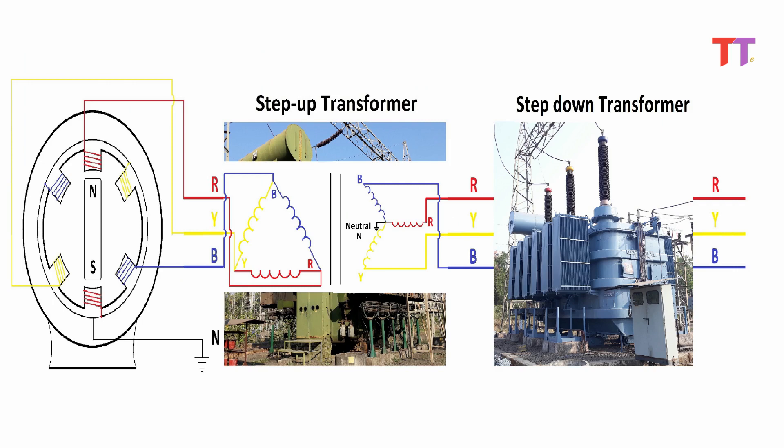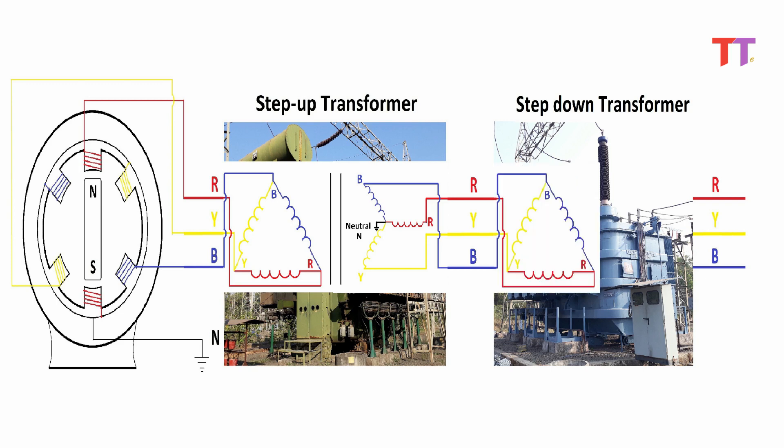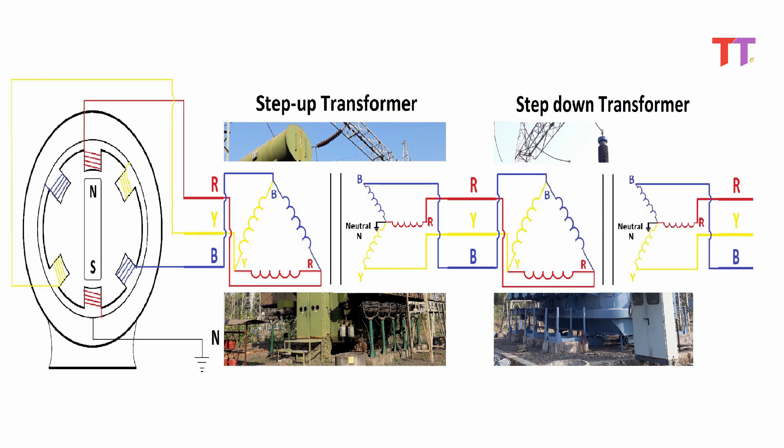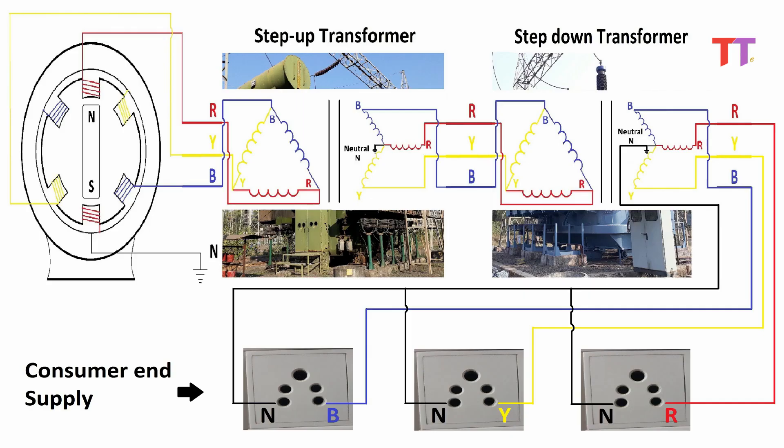Again, transmitted power is stepped down at the distribution end. Distribution transformers are generally delta-star connected, meaning the primary HV winding is delta connected and the secondary LV winding is star connected. At the consumer end, single-phase supply is given. Load is equally distributed on each phase so as to have a balanced three-phase load, and a common neutral is used for all three phases, which minimizes the cost of conductors.